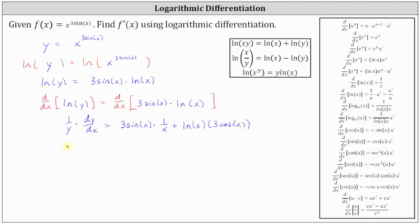Let's go ahead and see if we can simplify. We have one divided by y times dy dx equals three sine x divided by x, plus three cosine x natural log x.